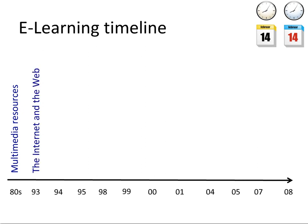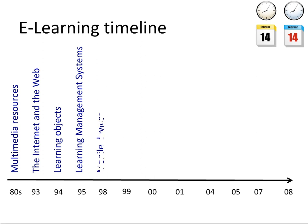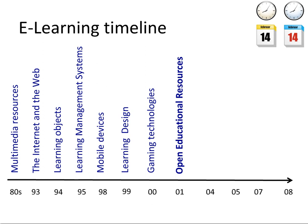I started by looking at the impact of multimedia resources, the emergence of the internet, the notion of learning objects which were precursors to open educational resources, learning management systems. And now, arguably, most institutions have some form of learning management system. The first wave of mobile devices, learning design as an approach to help teachers better create learning interventions, and gaming technology. Open educational resources emerged in around 2001.